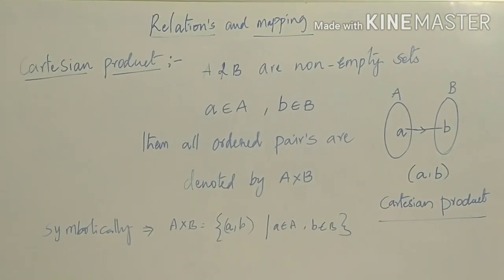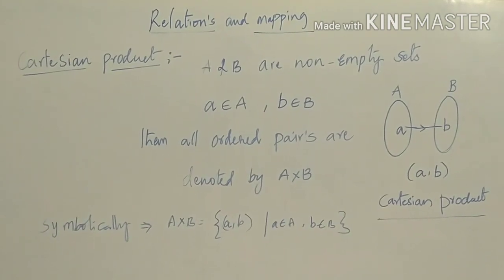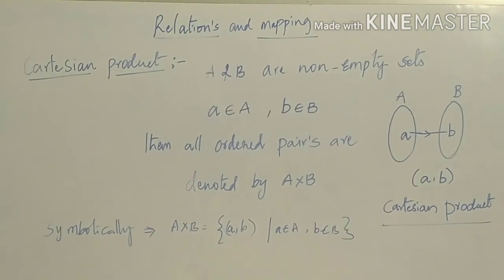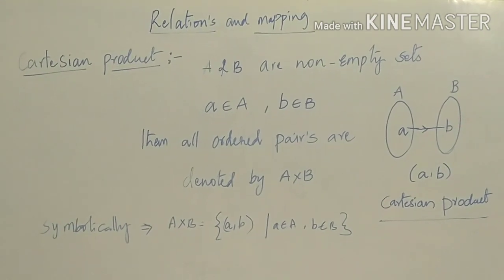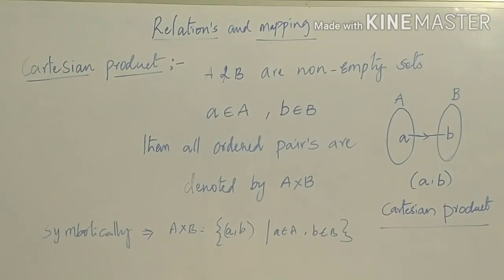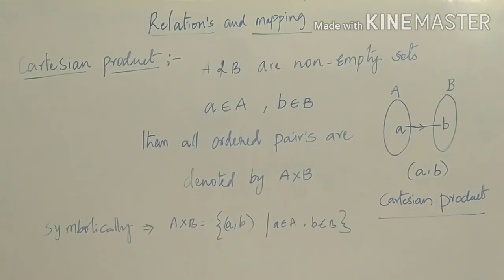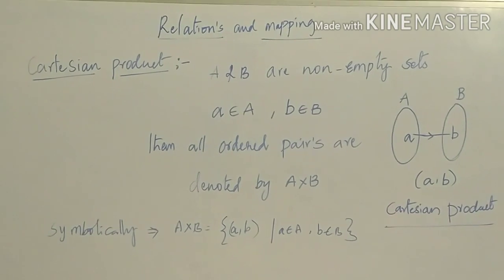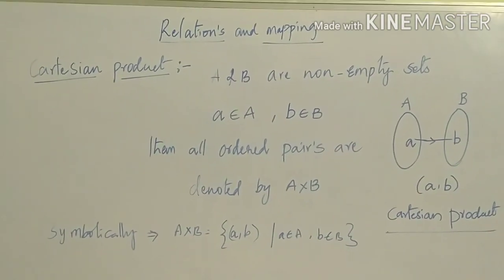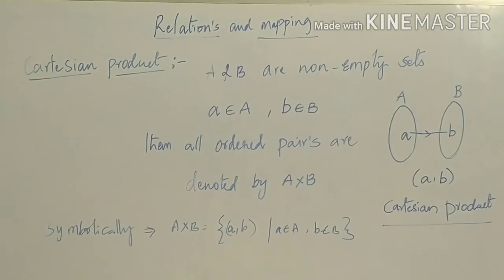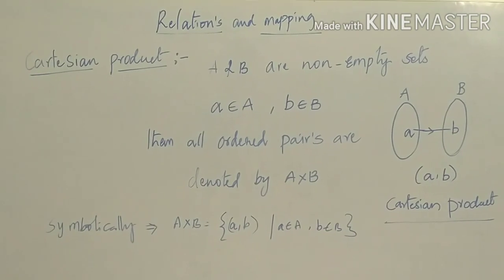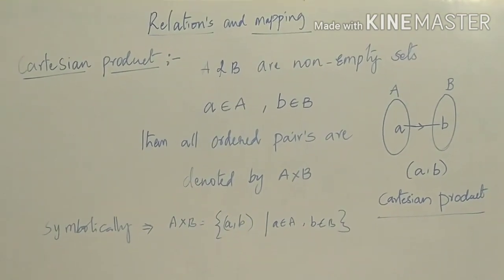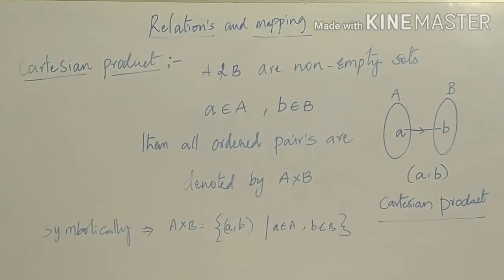Next: Cartesian product. A and B are non-empty sets. An element A belongs to set A and B belongs to set B. Then all ordered pairs are denoted by A cross B. See the figure — element A belongs to set A and B belongs to capital set B, so A is related with B. This product is called the Cartesian product. Symbolically, A × B = {(a, b) such that a belongs to A and b belongs to B}.